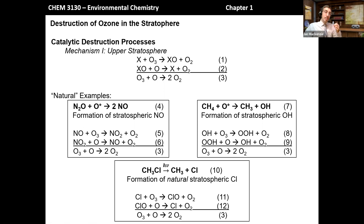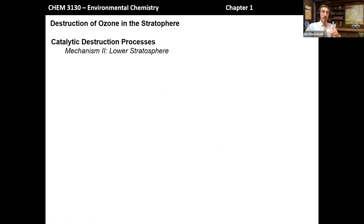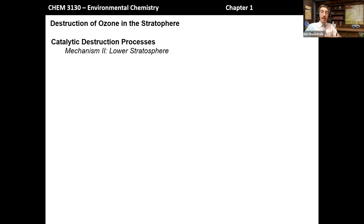In the lower stratosphere, the air pressure is much higher, UVC light intensity is much lower, and the concentration of single oxygen atoms is so much lower that Mechanism 1 really doesn't occur much there. And the lower stratosphere is where the majority of ozone in the ozone layer actually exists. So Mechanism 2 is actually the one that gets the most attention when it comes to ozone destruction.